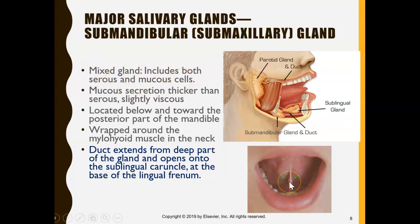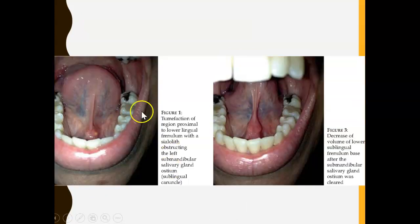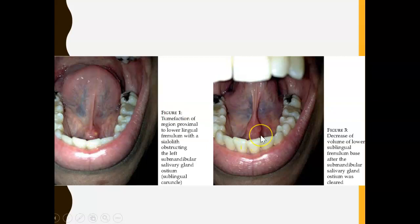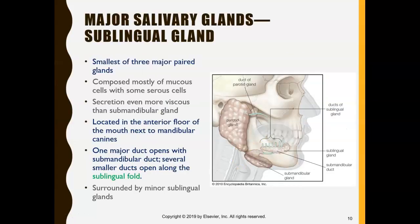At the sublingual caruncle, you might see what's called a sialolith or salivary stone. If blocked, it's very painful and saliva cannot flow out. To treat it, you can massage the area to help the stone come out and restore salivary flow. If the stone cannot come out on its own, surgery is another option to remove it.